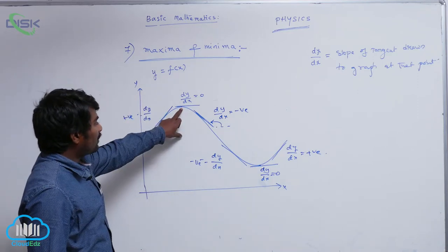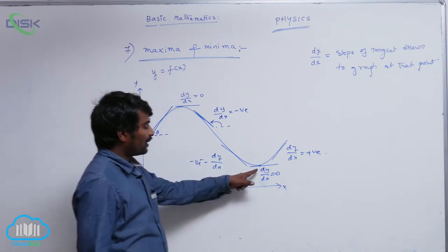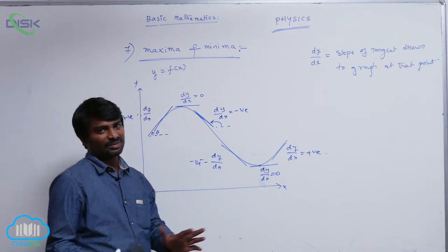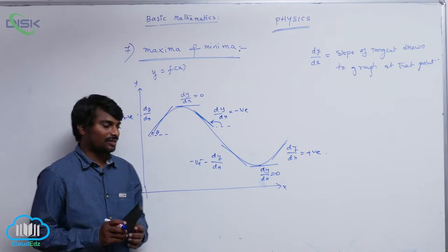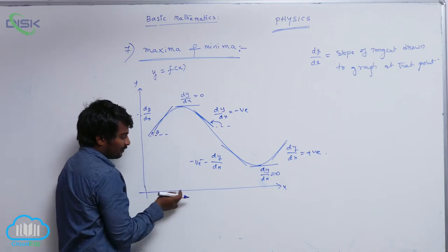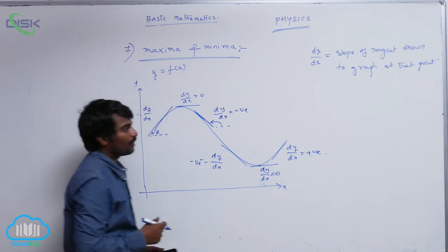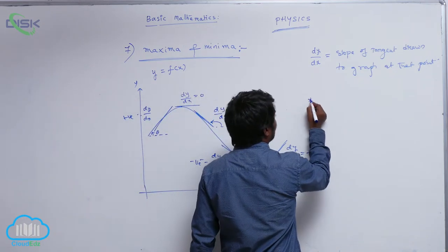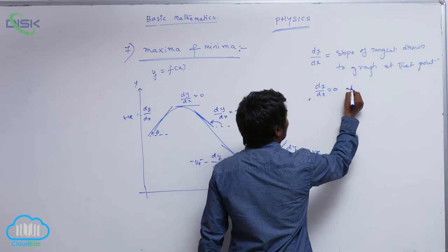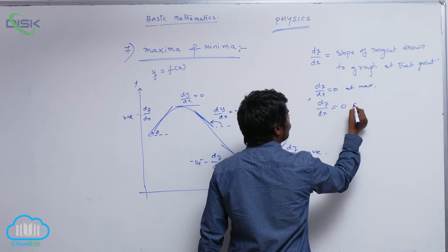When y attains maximum value, dy by dx is 0. When it attains minimum value also, dy by dx is 0. That is my first observation: dy by dx equals 0 at maxima, and dy by dx equals 0 at minimum. In both cases, dy by dx is 0.